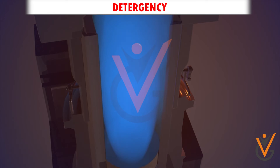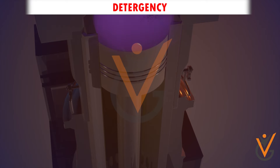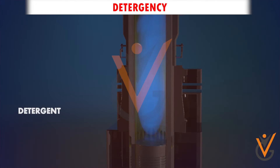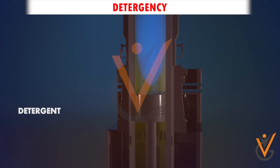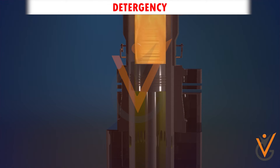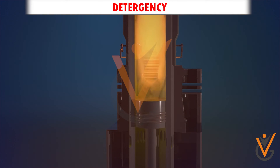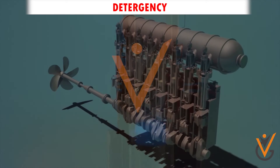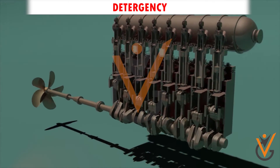Detergency. Detergency of the oil is obtained by adding some metallic-based additives, which will prevent the buildup of small deposits on the metal surface. In two-stroke engines, the cylinder oil detergency is very important as it removes the deposits from the ring-pack area and keeps the combustion space as clean as possible.